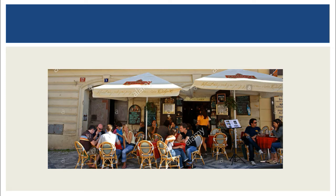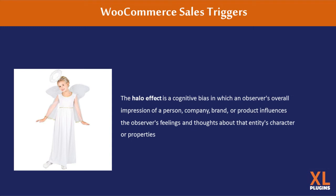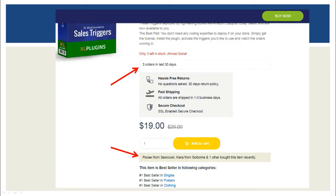This is also called in psychology the halo effect. By definition, the halo effect is a cognitive bias where an observer's overall impression of a person, company, brand, or product influences their feelings and thoughts about that entity's character or properties. Now I'm going to show you how you can use this insight about social proof and halo effect in your favor.